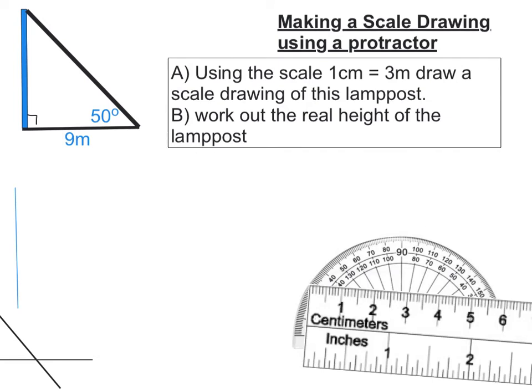In this video, we're going to make a scale drawing using a ruler and protractor. Here's my lamppost, and we know it's 9 meters away from this point, and the angle here is 50 degrees. Using a scale of 1 centimeter to 3 meters, draw a scale drawing of this lamppost.